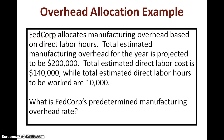The first thing you need to look for is what is their allocation base — that is, what's their cost driver. The very first sentence says that FedCorp allocates manufacturing overhead based on direct labor hours, so that is their allocation base.